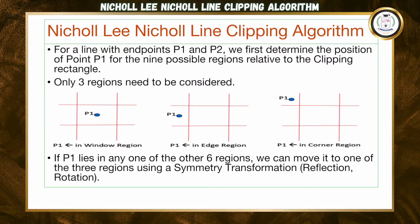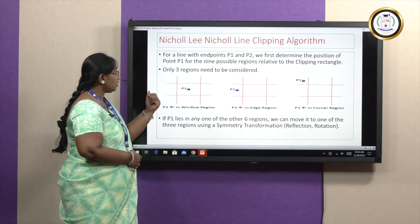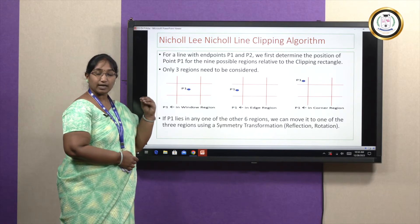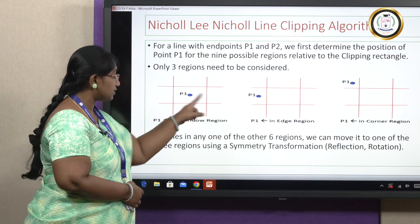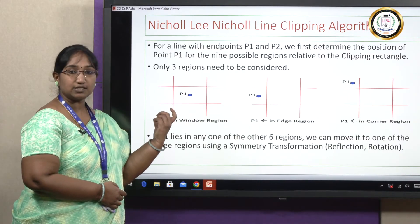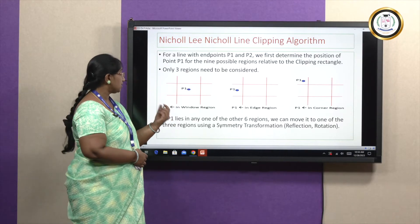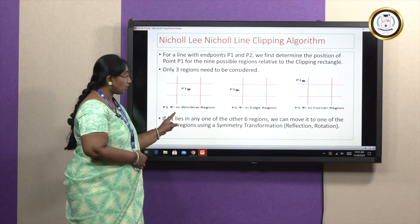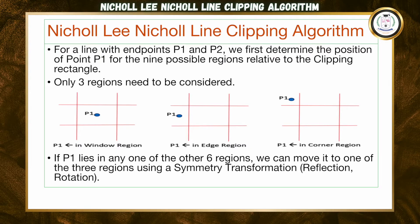For a line with endpoints P1 and P2, we first determine the position of endpoint P1 for all nine possible regions. Totally, as in Cohen-Sutherland, there are nine regions. We are going to consider only three of those regions: Case 1 where P1 is inside the window, Case 2 where P1 is in the edge region, and Case 3 where P1 is in the corner region.